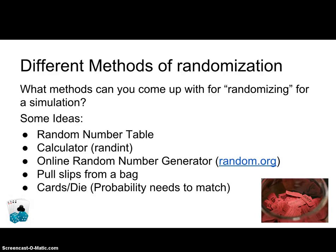The last method is cards or dice, but you have to make sure your probabilities match. If you use cards and you have 52 cards, the probability of getting any card is all the same — so everybody has the same probability when you're randomizing. Make sure your probabilities match when you use cards and dice. Those are various ways that we can use to randomize, and again, we randomize to reduce that bias. That's all I wanted to cover in this short video — ways to randomize and why we do it. Thanks for joining me. Bye.